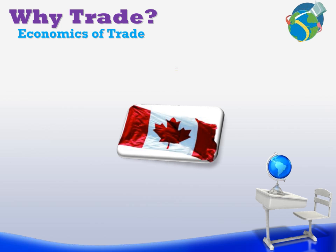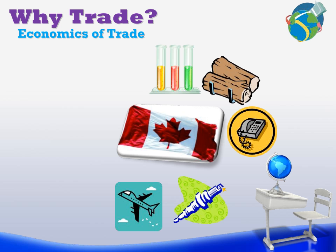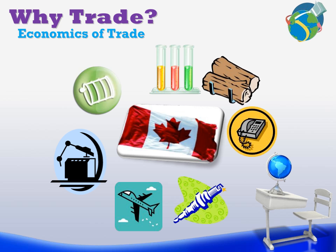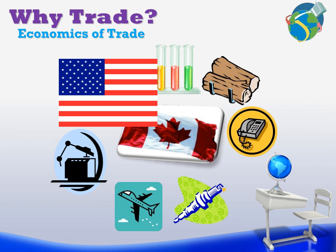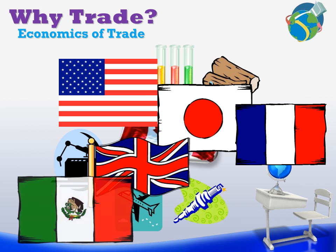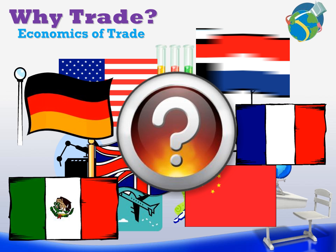Take Canada for instance. Why would Canada trade? We have chemicals and plastics, lumber and wood pulp and paper, telecommunications devices, auto parts, aviation and aerospace, machinery and equipment, and oil — all sorts of useful goods. Can we not provide for every single citizen in Canada? Well the answer is yes, but so does the US, Japan, Great Britain, France, Mexico, Germany, China, and even the Netherlands. So why do we trade with all these countries if they have what we have? The answer is quite simply economics.